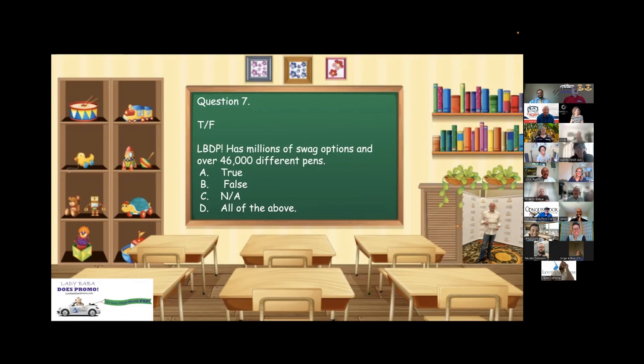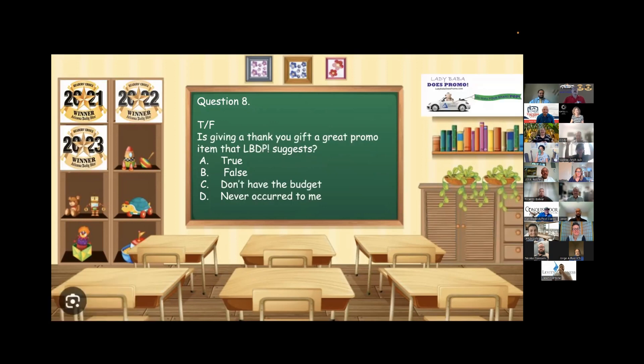Question seven. Valerie, you're filling in for Tammy. True or false? Lady Baba Does Promo has millions of swag options and over 46,000 different pens? A, true. B, false. C, non-applicable. Or D, all of the above. Oh, I know this because I see you guys' emails all the time. I think that you do have millions of swag options and over 46,000 different pens. Correct. Thank you very much.